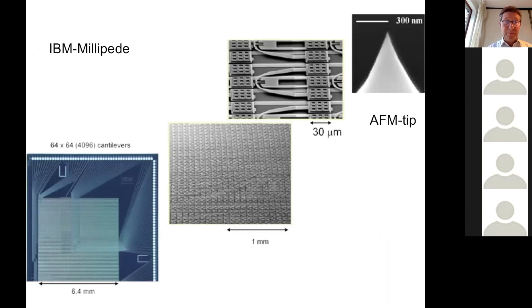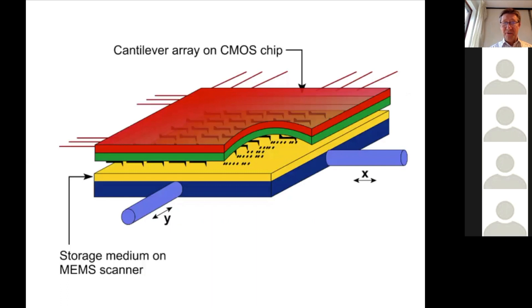Another application of these principles is Millipede. So IBM, again, they continued with this invention that they got the Nobel Prize for. And they made an array. So here we see one tip. The tip is on a little holder. And then they made an array of tips. Here we see 4,096 of these tips on a surface of 4.6 square millimeters. So they made a millipede, an element with loads and loads of little needles at the bottom that they can address individually.